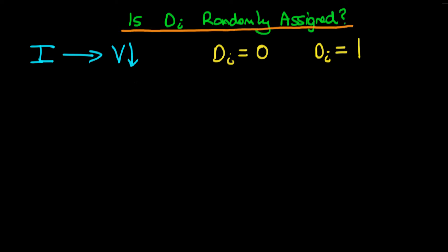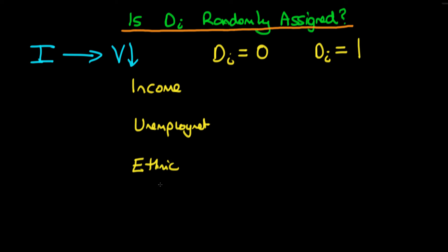Some of the variables we might look at include the level of income within those regions. We might also look at the level of unemployment, both of which have been shown in the past to be relatively important determinants of whether a certain region actually has a higher level of civil conflict. We might also look at the level of ethnic fractionalization across the two different groups, as this has been shown in some studies to be a determinant of the level of civil conflict within an area.